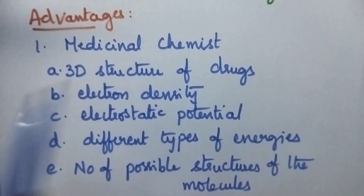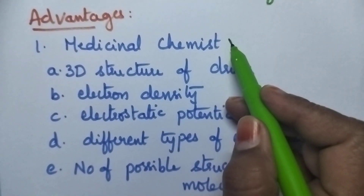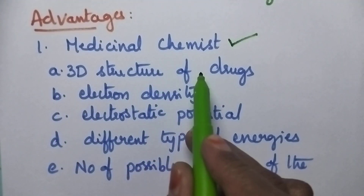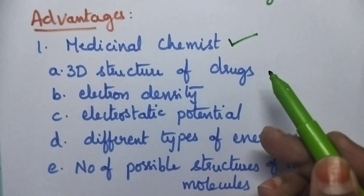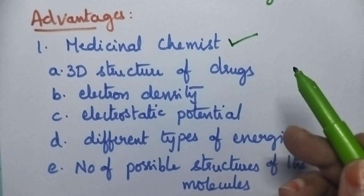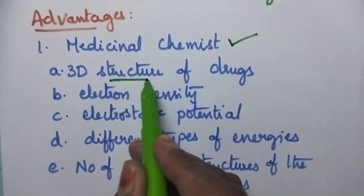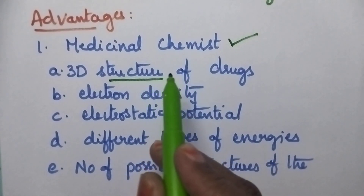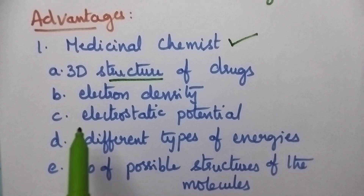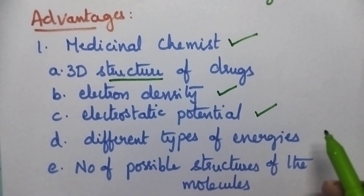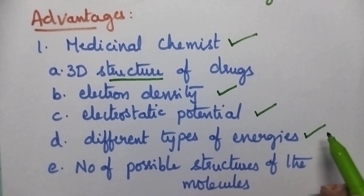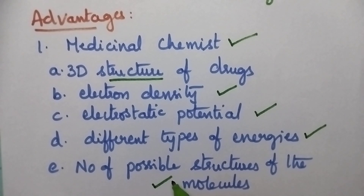Computational chemistry is highly useful for the medicinal chemist to determine the detailed structure of drugs — that means, what type of bonds are present in the drugs, what are the bond lengths, and what type of atoms are present. The complete structure of the drugs can be studied using computational chemistry. It is also possible to study in detail each and every property, such as the distribution of electron density, electrostatic potential, the different types of energies associated with the drugs, and the number of possible structures exhibited by the given molecules or drugs.